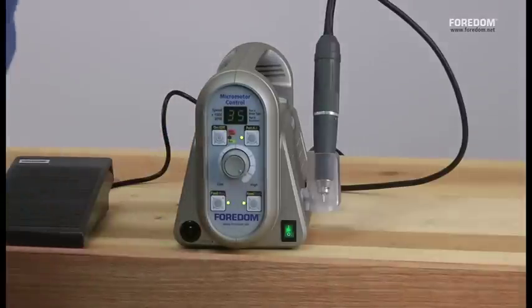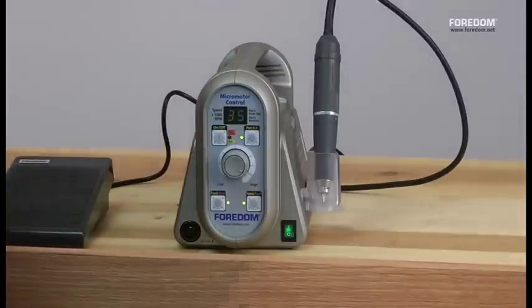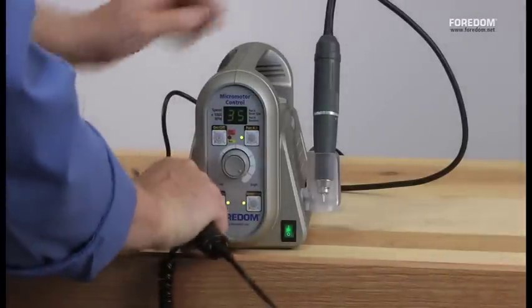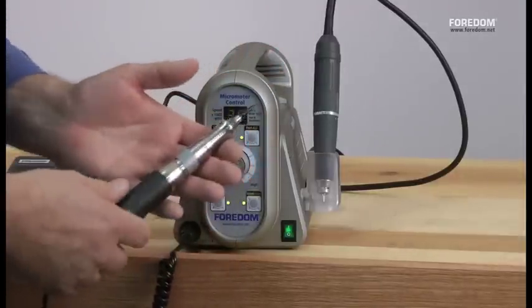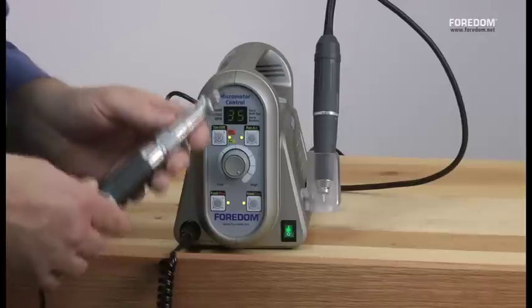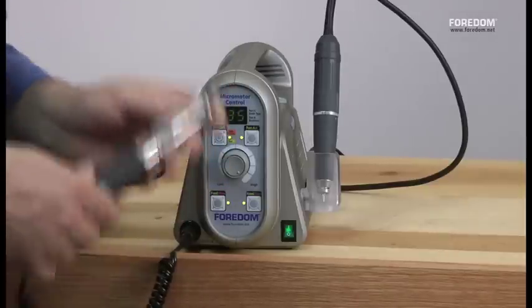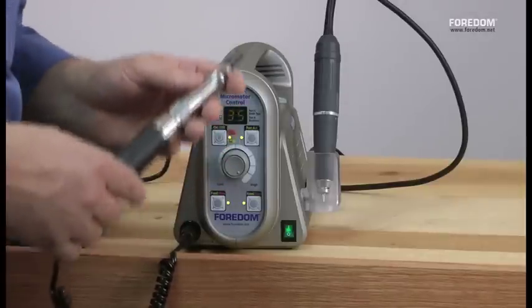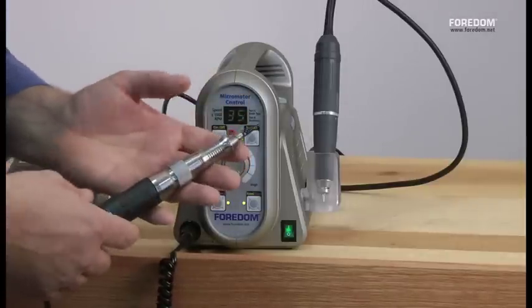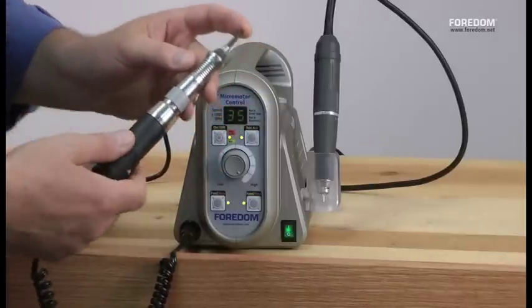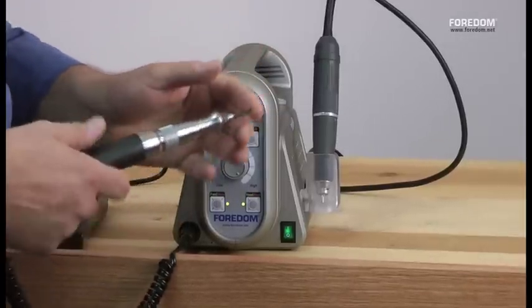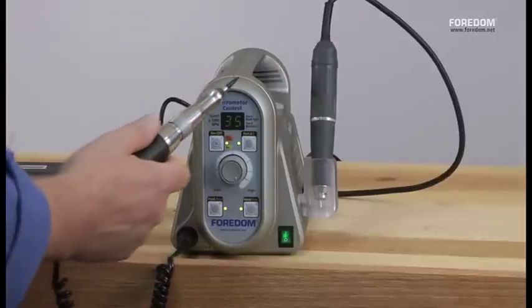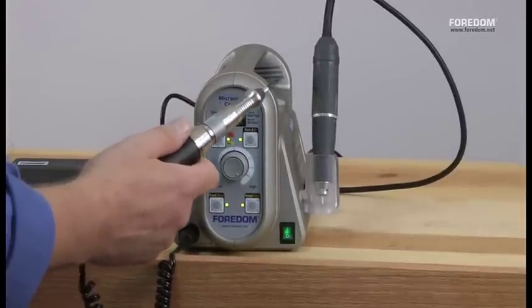And our third hand piece is our hammer hand piece. This actually, even though it says it's doing 35,000 RPM, it's doing 2,500 strokes per minute SPM. It's not rotary. The beauty of this hand piece is it's actually not stroking right now.